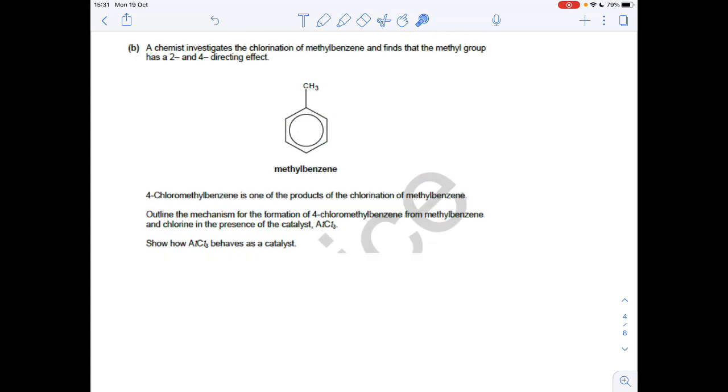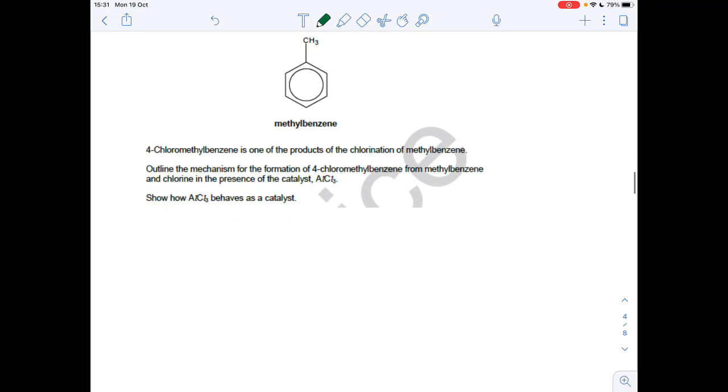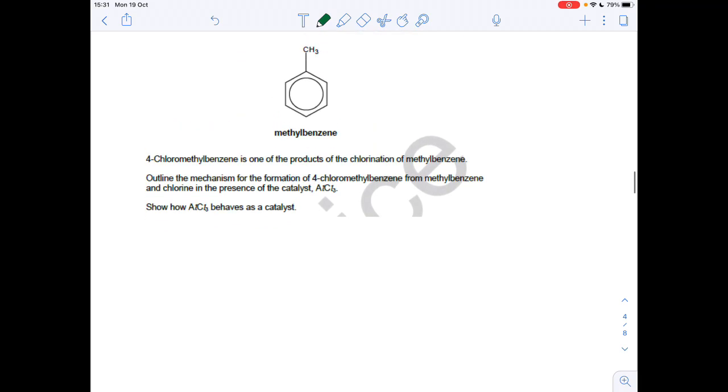Part B now. A chemist investigates the chlorination of methyl benzene, finds that the methyl group has a two and four directing effect. So we've got to outline the mechanism for the formation of four chloromethyl benzene from methyl benzene and chlorine in the presence of that AlCl3 catalyst. And we've got to show how it acts as a catalyst. First part of the mechanism is the production of the electrophile. So that's AlCl3 plus chlorine goes to AlCl4 minus plus Cl plus. That's that electrophile.